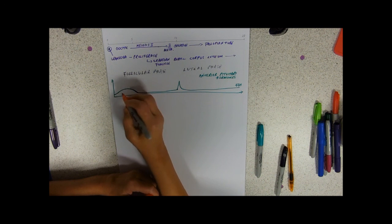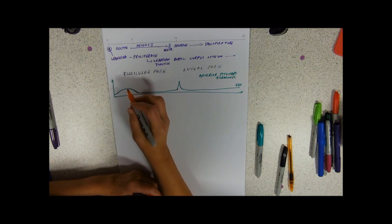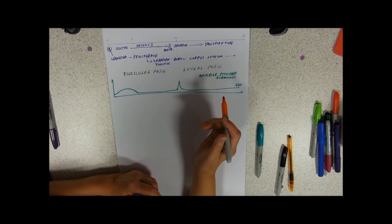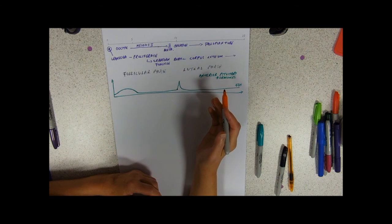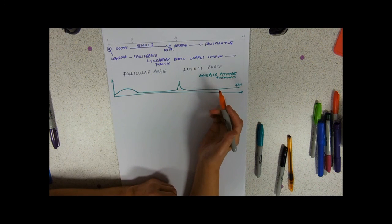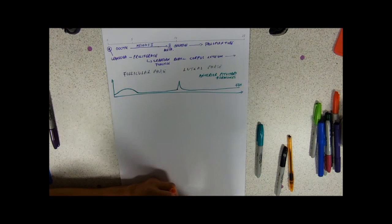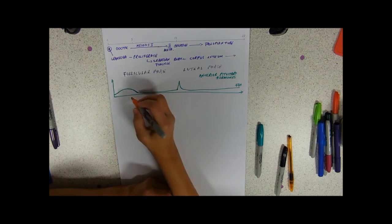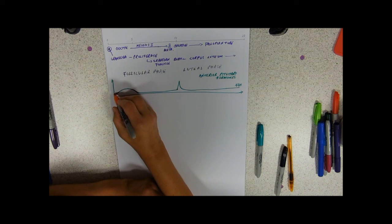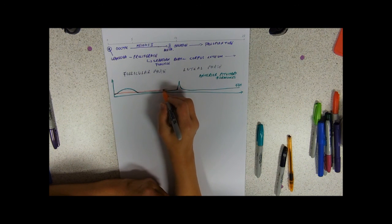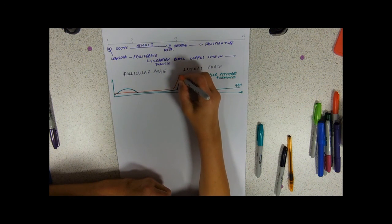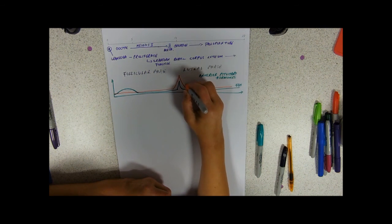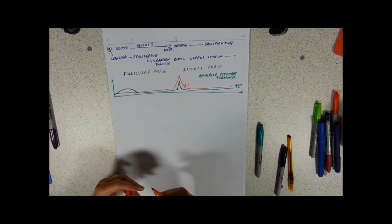And our other anterior pituitary hormone is LH. LH seems to be necessary for the granulosa cells to actually be able to produce hormones. Same hormone operates in males. I'm just going to draw it slightly above this line, so we've got to have some level of it, and again this is one that spikes at ovulation. So the cause of ovulation is the spike in these two hormones.